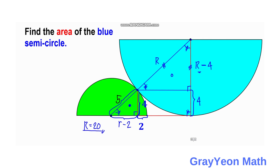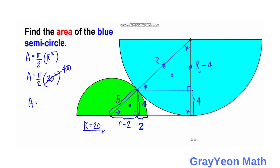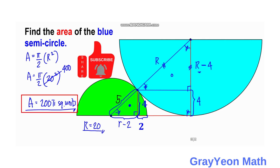Now for the final step: since we already have the radius of the blue semi-circle, the area is simply: Area = (π/2) × R². With R = 20, we get (π/2) × 400 = 200π. So the area of the blue semi-circle is 200π square units.